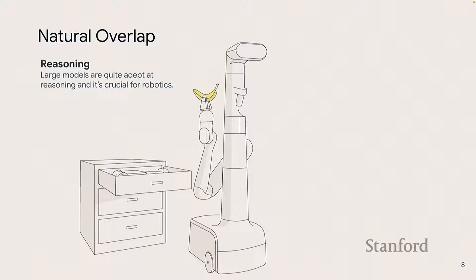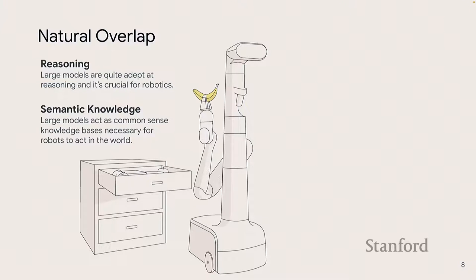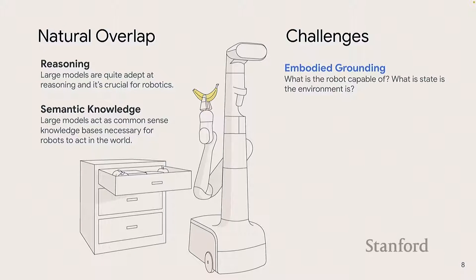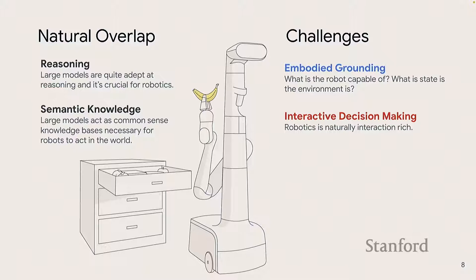There are some areas of natural overlap: the reasoning capabilities of language models are super important, there's general knowledge useful for robots acting in the world, and semantic knowledge of how things map to each other and what order to do things in — areas where robotics has traditionally struggled. But there are a lot more challenges than areas of overlap. While other fields have been quickly revolutionized by foundation models, robotics has challenges like general grounding — you need to know what your robot is capable of and what the environment has. A language model can't see anything. Interactive decision-making is also a core part of robotics that they basically don't have.